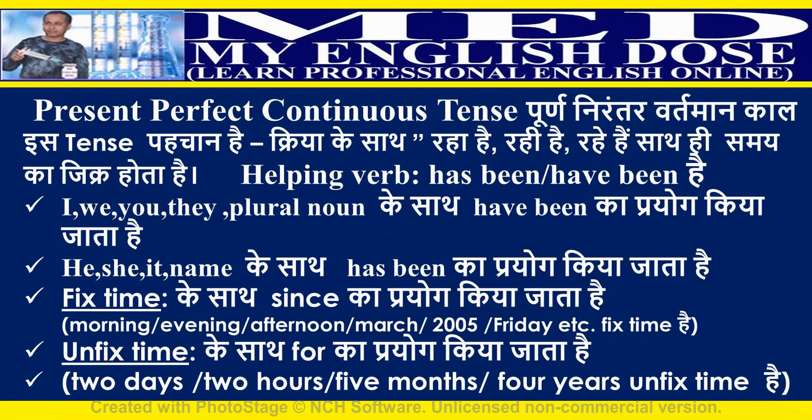Present perfect continuous tense identification: the work is ongoing with a point of time or period of time. Helping verbs are 'has been' and 'have been'. Use 'have been' with I, we, you, they, or plural nouns. Use 'has been' with he, she, it, a name, or singular noun.